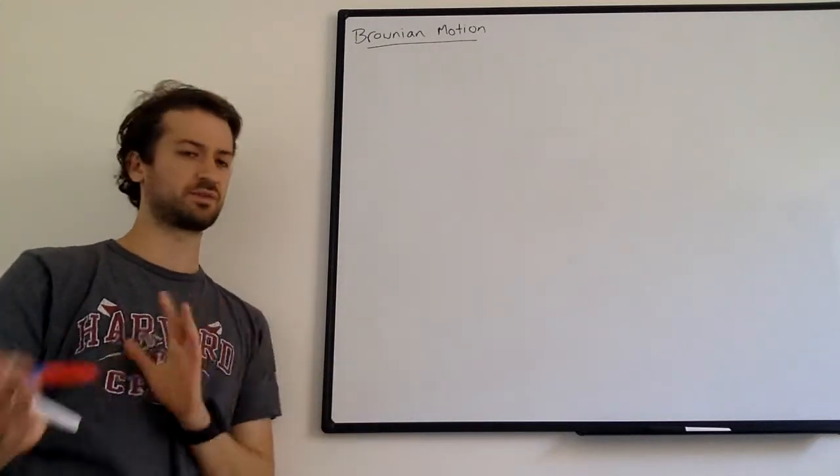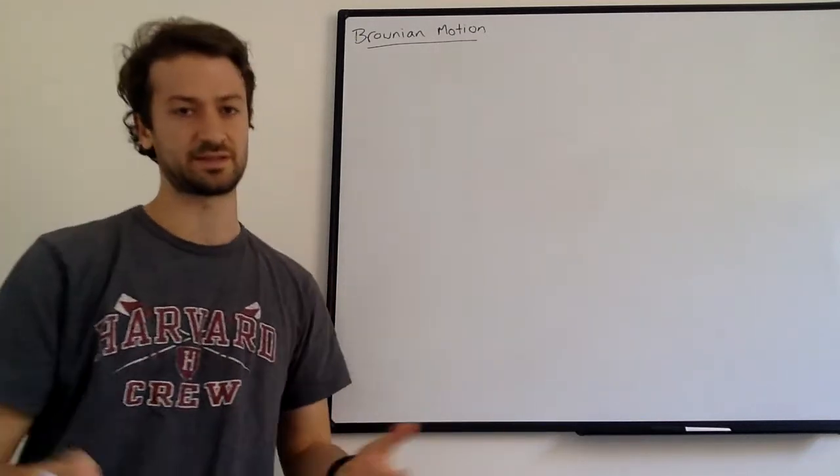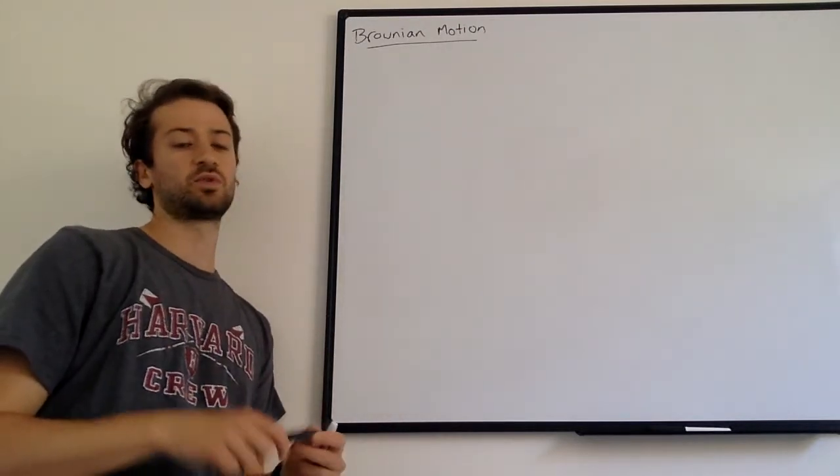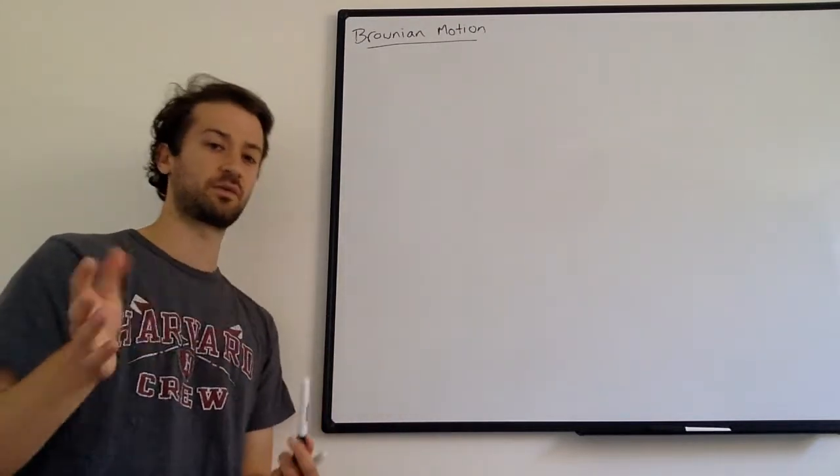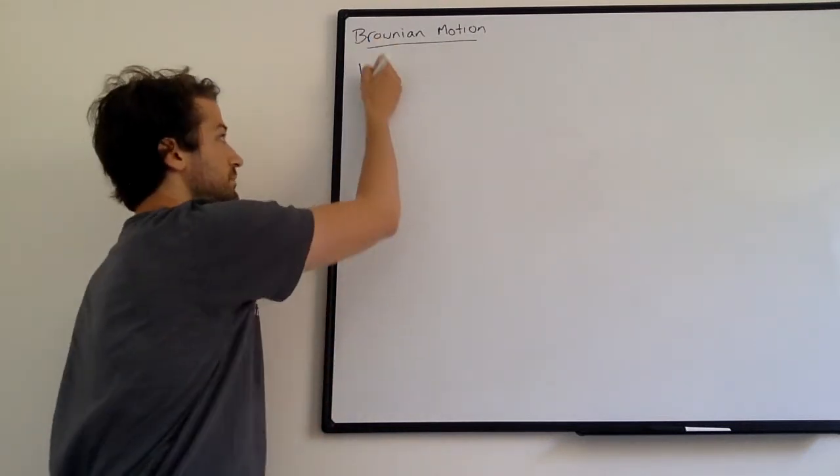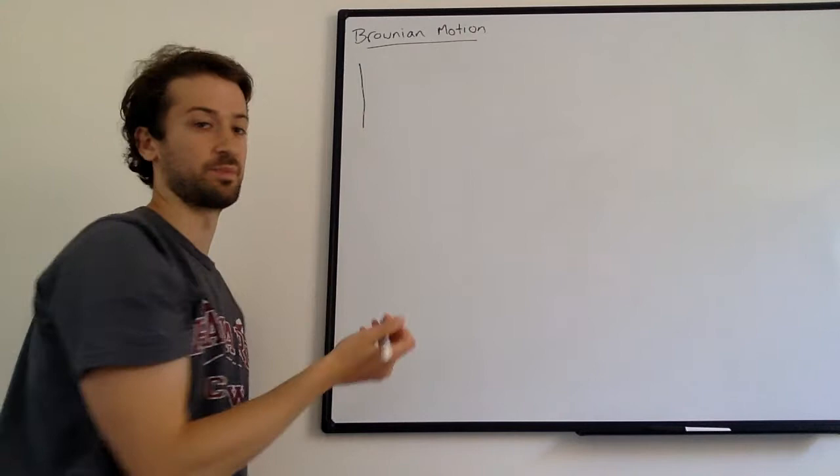It has applications in all different fields, physics, finance, obviously statistics. And we're just going to give sort of the introduction here, a couple of the cool properties of Brownian Motion, and some later videos to show some interesting results. So let's just start by actually drawing one sample path of Brownian Motion.